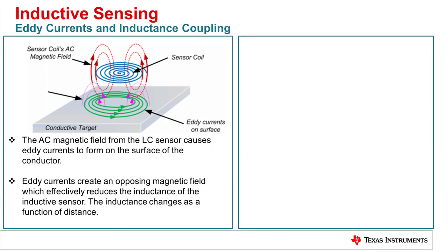When a conductive target is brought close to the LC tank, eddy currents form on the surface of the conductor. These eddy currents create an opposing magnetic field which couples onto the LC tank and reduces the inductance of the inductive sensor. Therefore, the inductance seen on the LC tank changes as a function of distance of the conductive target.